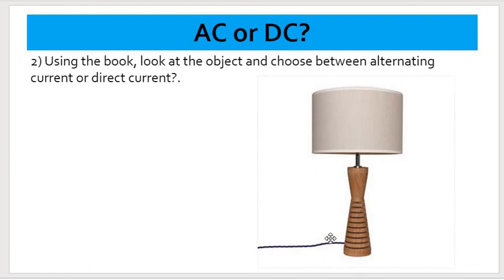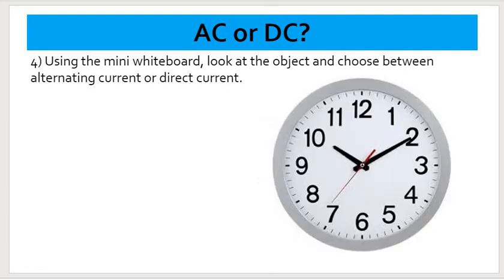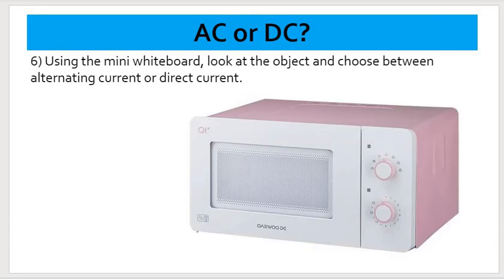AC or DC. You're just putting the number and the answer. Number three, an alarm clock. AC or DC. Over here, a wall clock. Decide AC or DC. Number five, a remote control appliance. AC or DC. And number six, microwave oven. AC or DC.